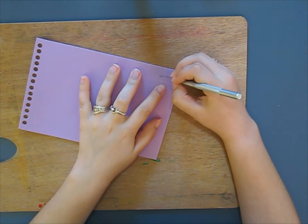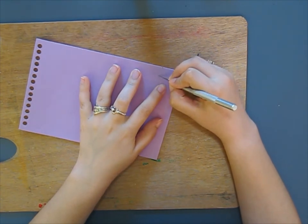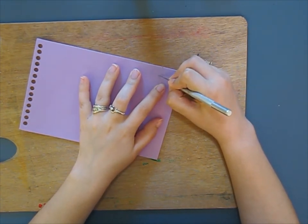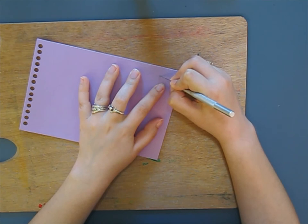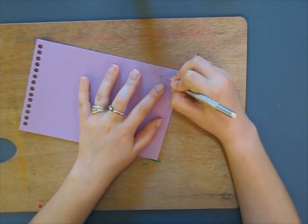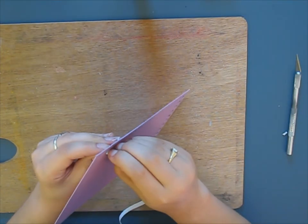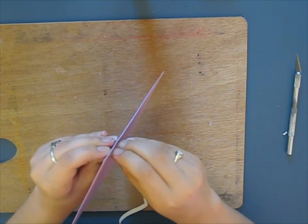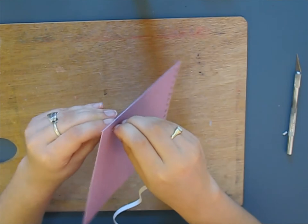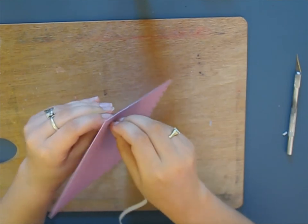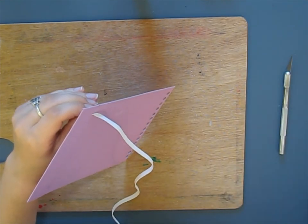Next, what we want to do is cut the slits for our elastic to go through. This is an optional step. You do not have to have the elastic on your book. I just thought it was a nice thing to keep my book closed when I have a lot of things inside the envelope book. What I did is cut two slits a little bigger than the width of my elastic. You want it a little bigger than the width of your elastic so your elastic can pull through easily.